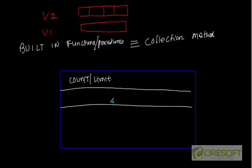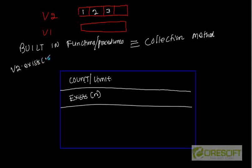Another method is exists(n), which returns true if the nth element exists in the v array. For example, if v2 contains values at indices 1, 2, and 3, then v2.exists(1) returns true because the first element exists. However, v2.exists(9) returns false because there is no 9th element in v2.